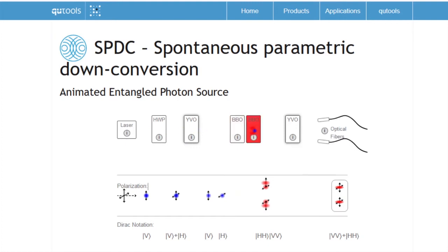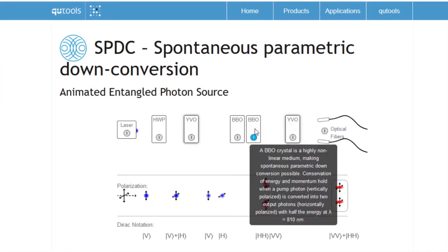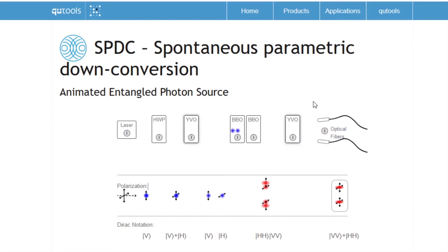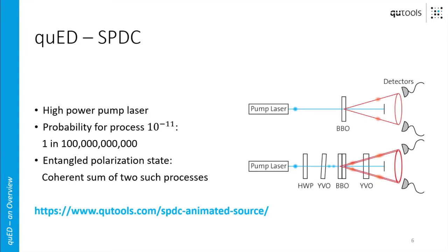Once the compensation crystals are in place, when the photons are coupled into the fibers you cannot distinguish anymore whether they came from the first crystal or the second crystal. This means you have to coherently add up the different terms, which leads to the entangled state phi-plus in the end. This SPDC process happens with a probability of only 10 to the minus 11, so only a very small fraction of pump photons are transformed into down-converted photons — which is why we need such a high-power pump laser to get a reasonable number of photon pairs.